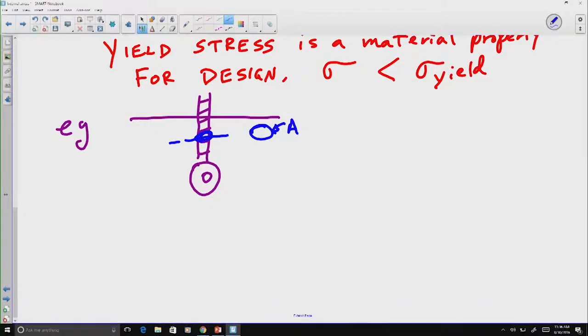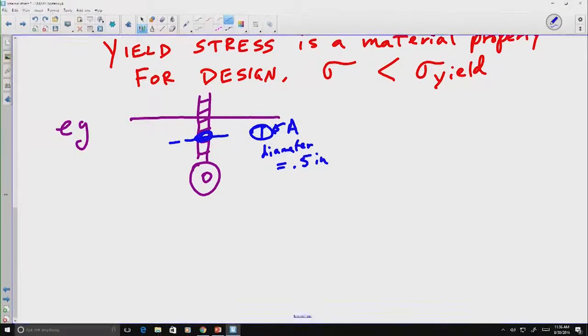And let's say that that bolt has a diameter equal to half an inch. Well, if we know what material the bolt is made out of, perhaps it's made out of steel. And we might be able to look up in a chart somewhere what the yield strength of steel is. Here's an example yield strength for a certain type of steel might be 50,000 psi, pounds per square inch.